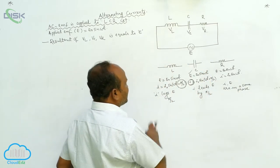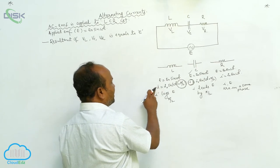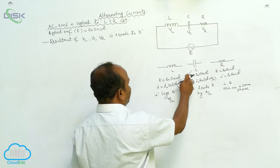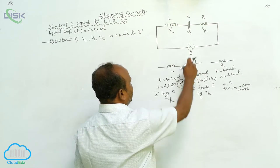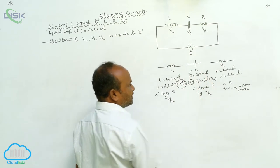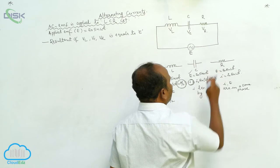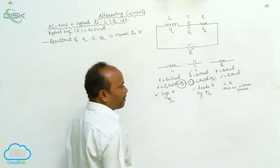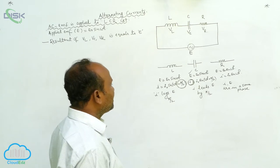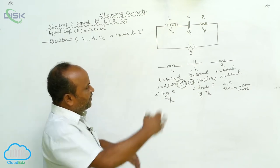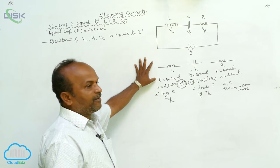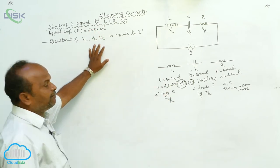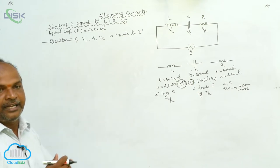What is the phase difference between EMF and current in the inductor? 90 degrees. What is the phase difference between EMF and current in the case of the capacitor? 90 degrees. In the case of the resistor, there is no phase difference between voltage and the current. Because there is a phase difference between EMF and current, in order to calculate the resultant EMF, we are using the vector diagram.